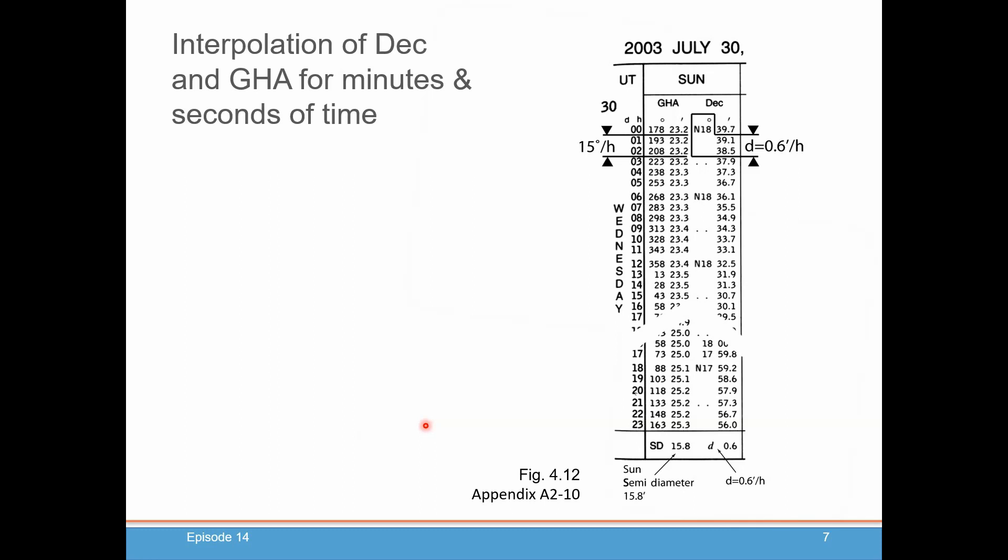Let's dive right in. Let's say we are on July 30th, the year 2003, and we're taking a sight somewhere between the time of 01 and 02 hundred hours UTC. You're going to go into your almanac and look at these values. Let's say it's 01 hundred hours and 20 minutes. What you're going to pull out of the almanac is the hours, the row for the hours. We're going to look at the row for 01 hundred hours and pull these numbers out.